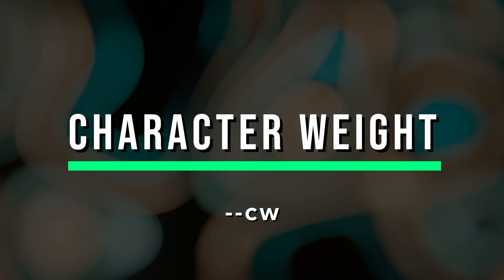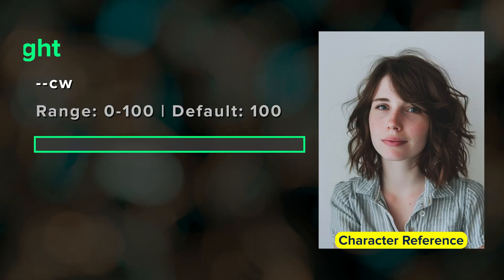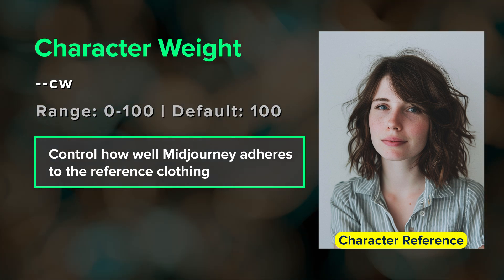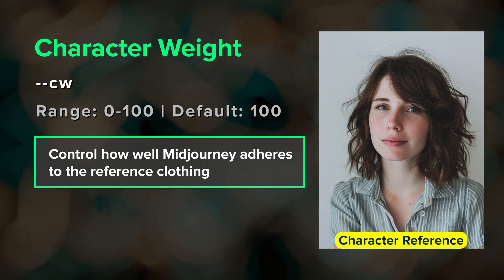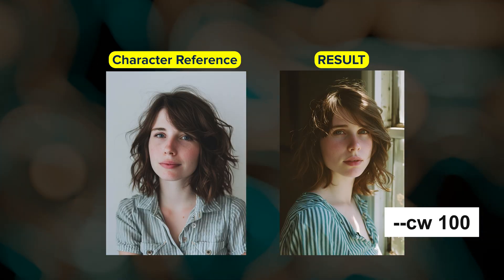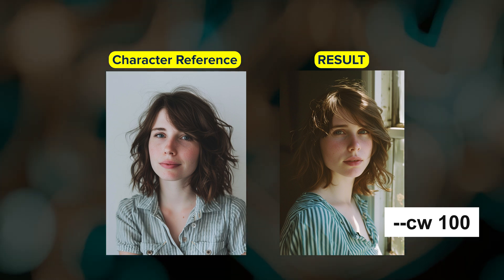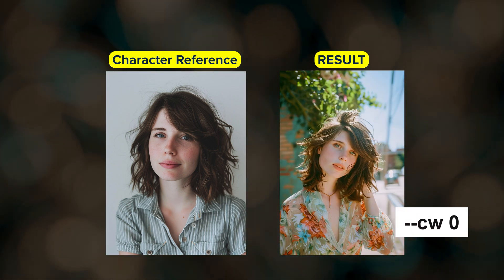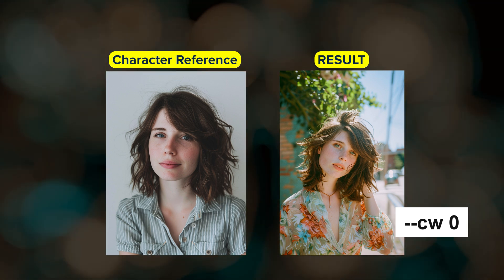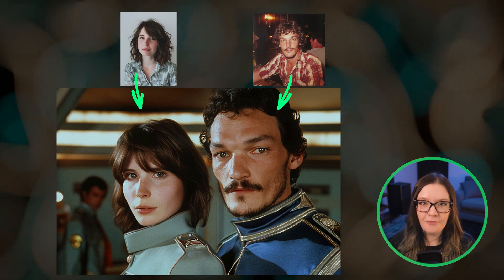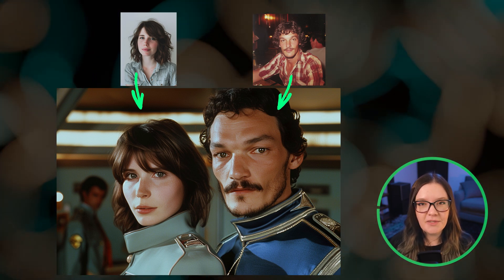The character weight parameter, --cw, controls how closely Midjourney adheres to the clothing and sometimes hairstyle of your reference character. The default value is 100 and the range is 0 to 100. When character weight is 100, Midjourney will lock onto the face and clothing of the reference character. When it's 0, Midjourney will only lock onto the face, allowing you to change the clothing while retaining the character's facial features. Check the videos linked below for a deep dive into character reference.